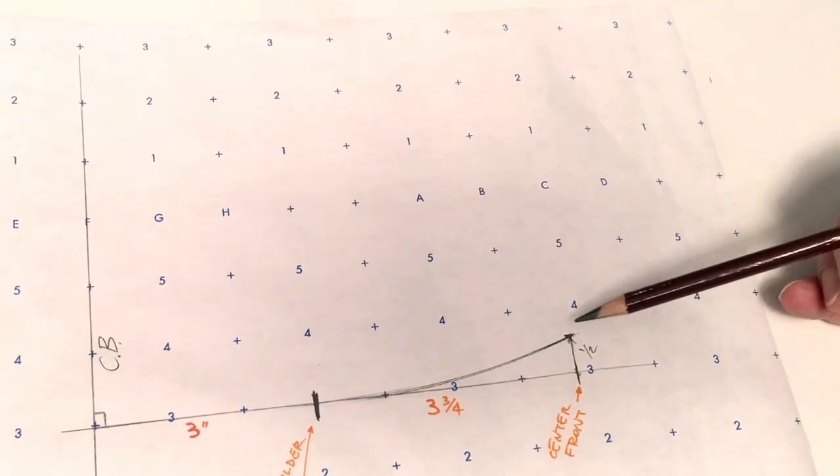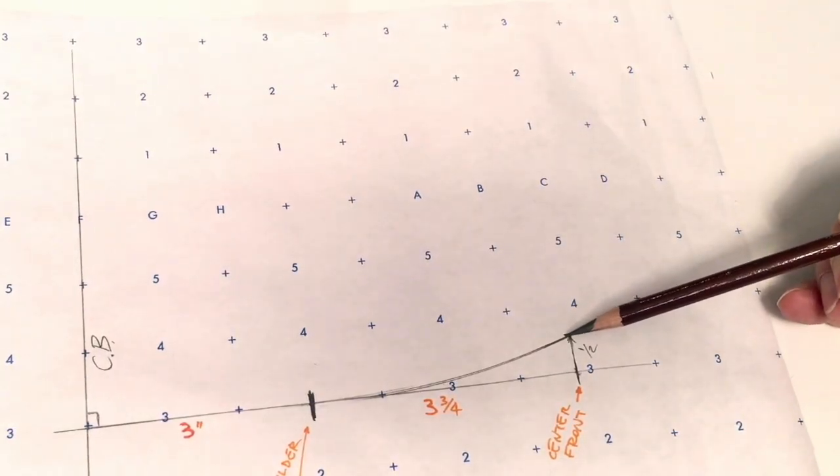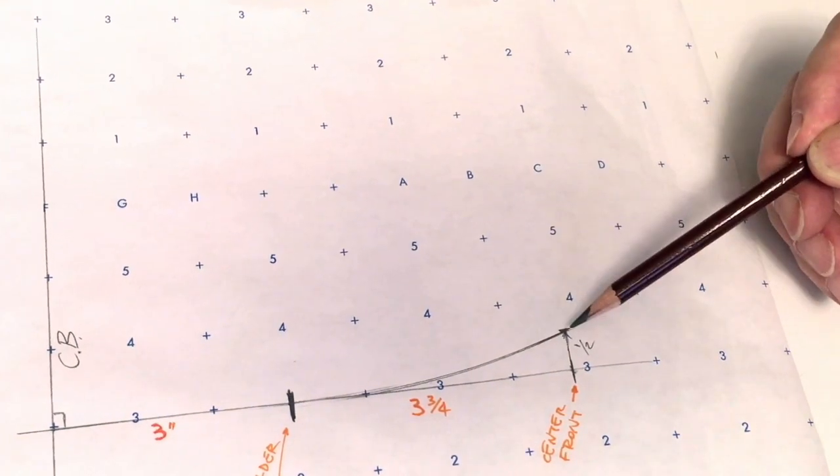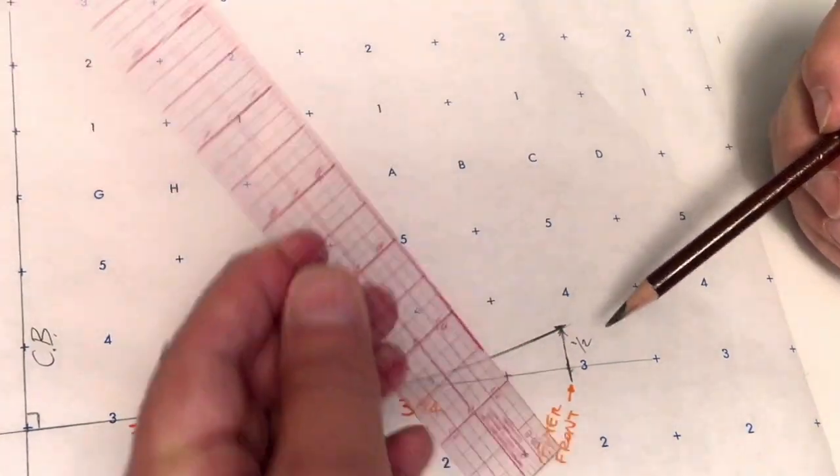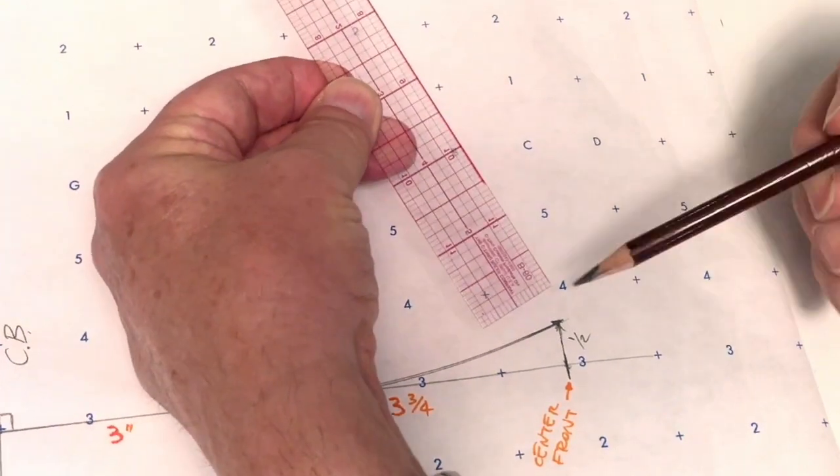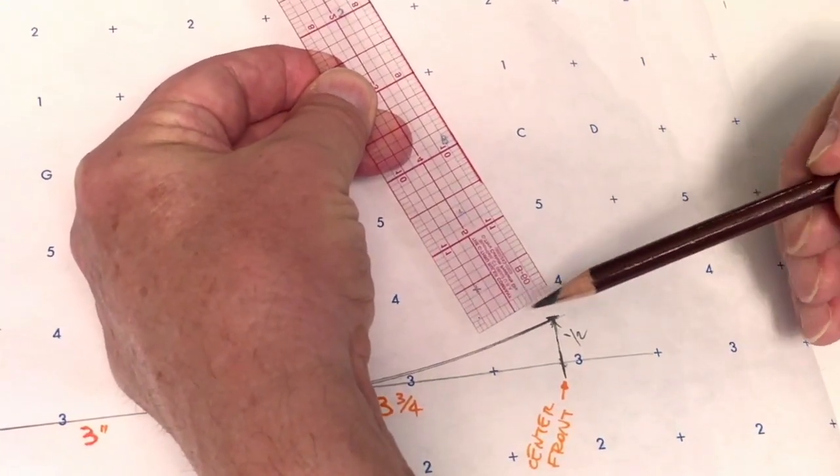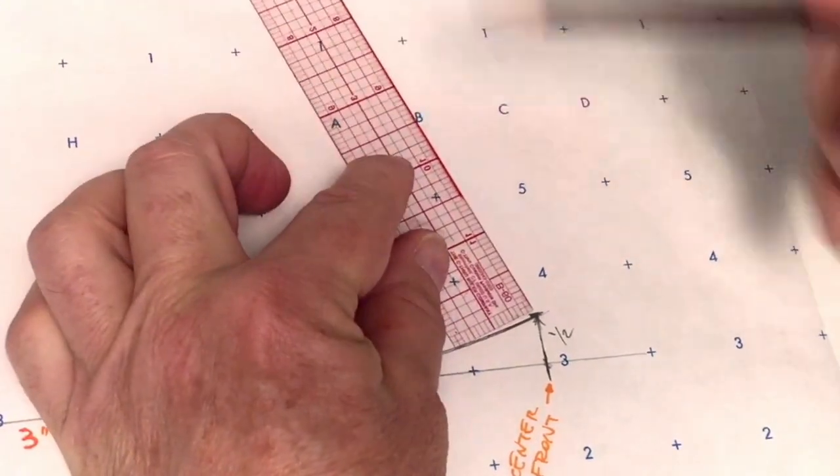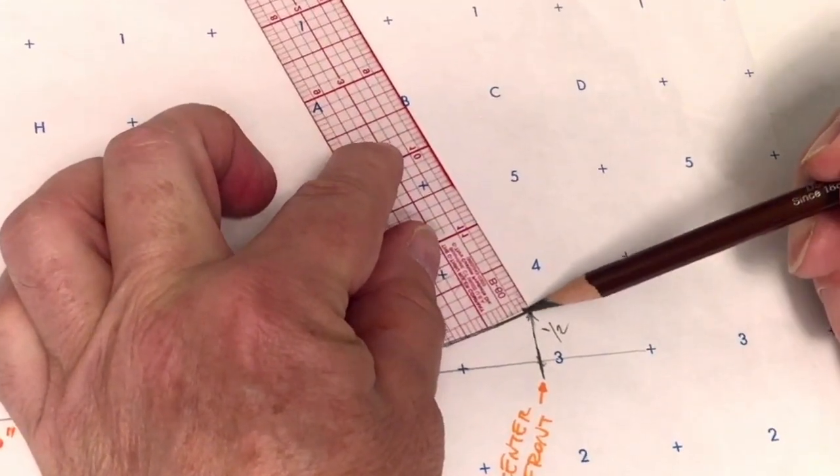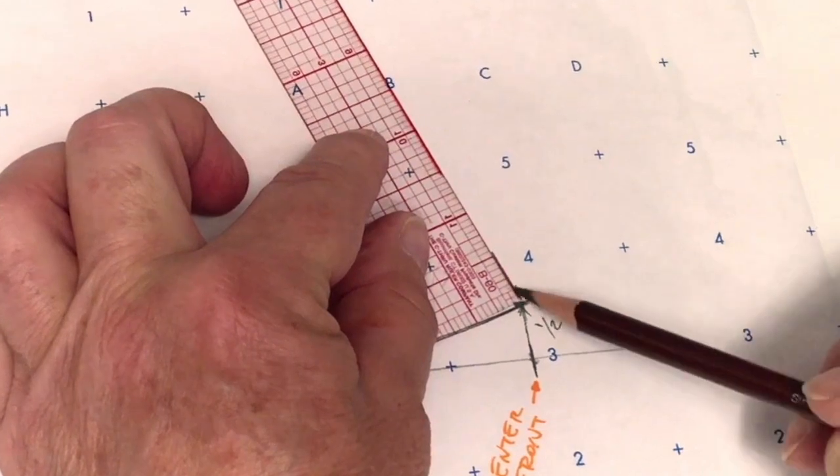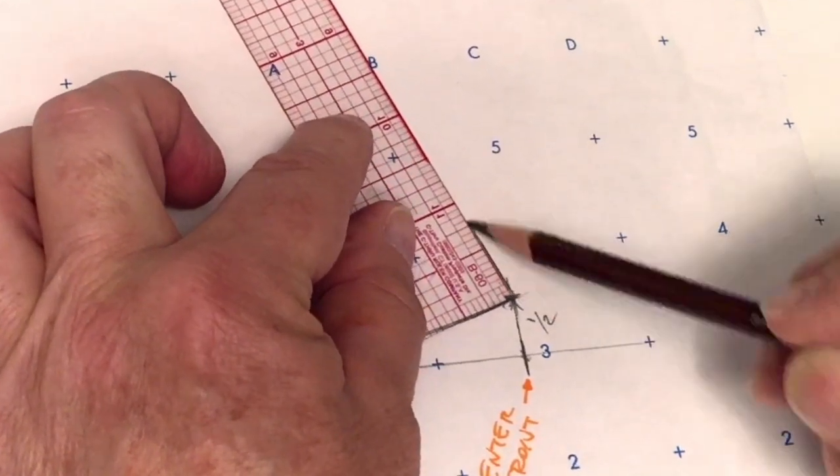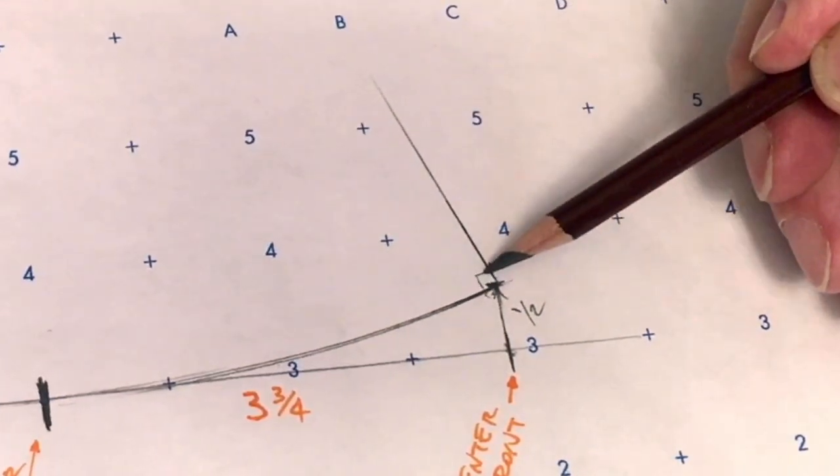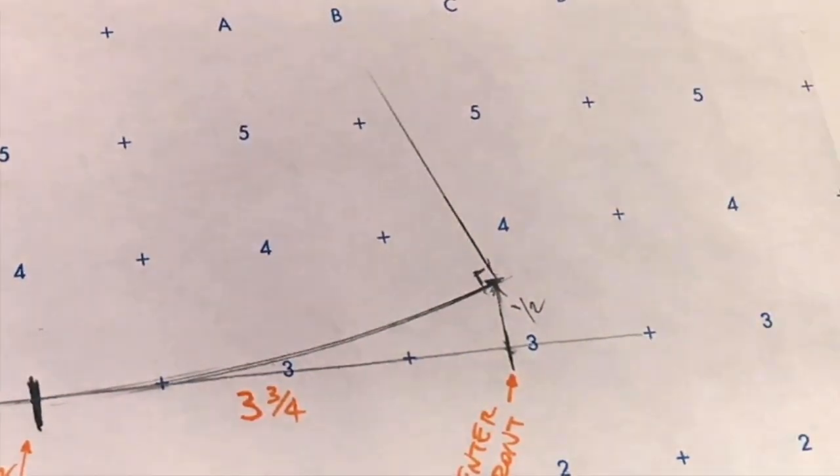Next, from this new cross mark right here, we're going to create a 90-degree line going in this direction. In case you forgot what a 90-degree line looks like, this is a 90-degree angle. So I'll place my ruler here and go in this direction for about an inch to an inch and a half. We're going to shape it in a minute. I've just created a 90-degree angle right there.